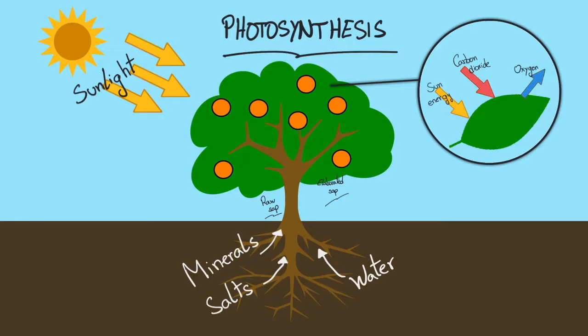In photosynthesis, the plants absorb water and minerals through the roots. This mixture of water and minerals is called raw sap, and it goes up the stem and to the leaves.